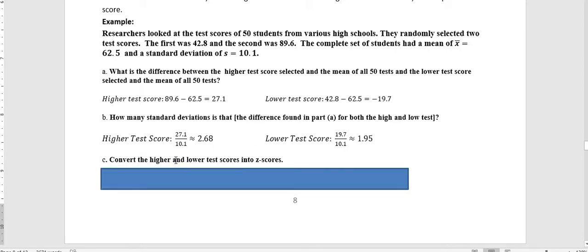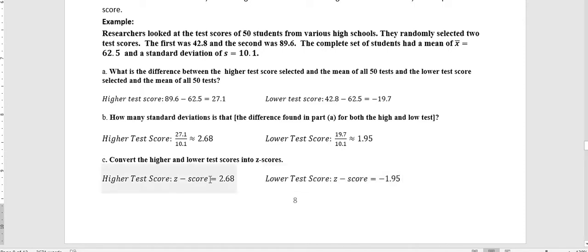Now we're asked to convert these 2 test scores into z-scores. Now z-scores, we can start to talk about negative versus positive. The higher test z-score was 2.68, but the lower test score was negative 1.95.